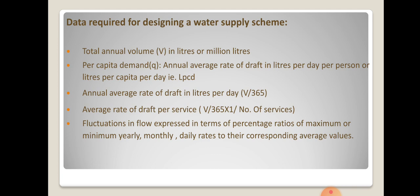Other required data include the average rate of draft per service — calculated as the annual average rate of draft divided by the total number of connections, where each household connection is called one service. Also required are the fluctuations in flow, expressed as a percentage ratio of maximum or minimum, which may be yearly, monthly, or daily rates. These are the important data required for designing any water supply scheme.